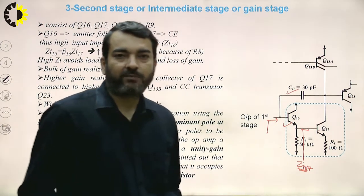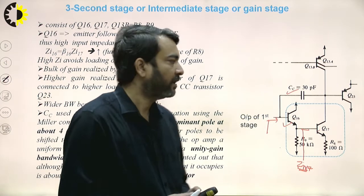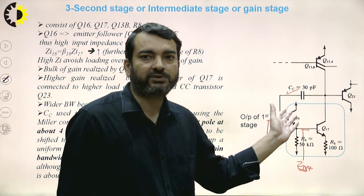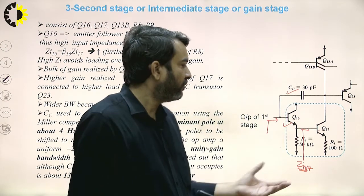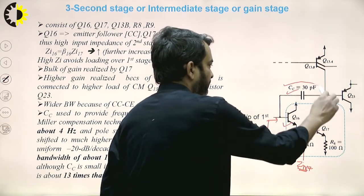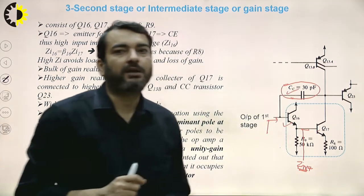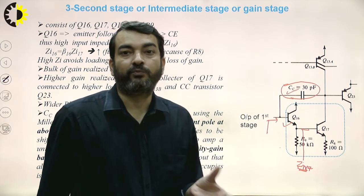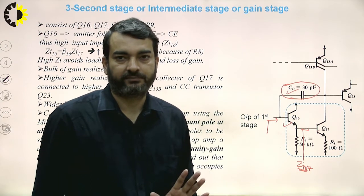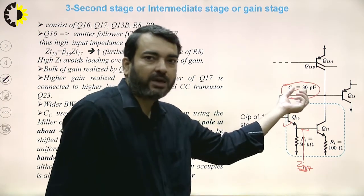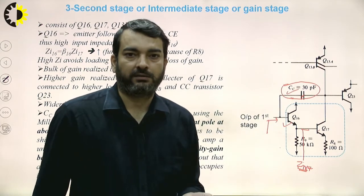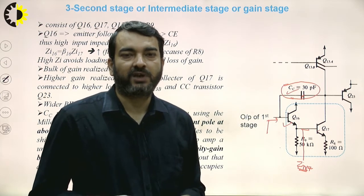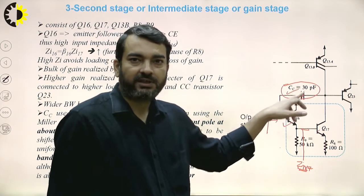We will be able to realize higher bandwidth, and the unity gain frequency will be approximately 1 MHz. Interestingly, this capacitor of 30 picofarads occupies almost 13 times more area than a single BJT transistor. This illustrates how much area even a small capacitor occupies on an integrated circuit, which is one reason why we avoid using capacitors in integrated circuits.